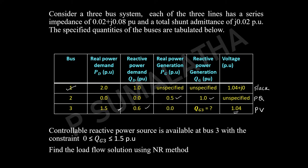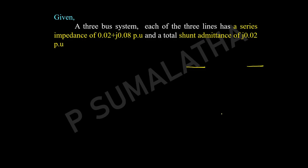Before performing any load flow analysis, we must form the bus admittance matrix (Y bus). Let us read the data and see how to form the Y bus. They have given the series impedance value of 0.02 + j0.08 per unit and the shunt admittance of j0.02. We have a 3-bus system. I will draw the network and explain the concept, then we will see the steps to calculate the required values.